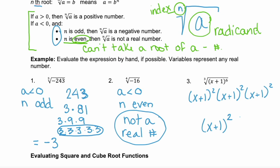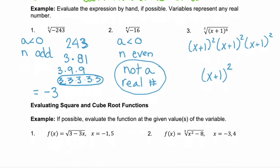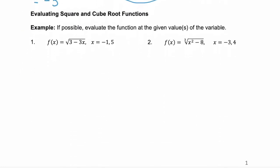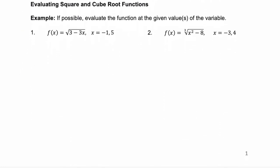Now let's look at square and cube root functions. Remember that a function is really just a machine. So the notation f of x is saying that we have a function called f and we're inputting values of x and seeing what comes out. So for example 1 and 2, if possible, evaluate the function at the given values of the variable.